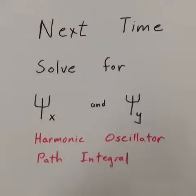Next time, we will solve for the x and y electron wave functions from the path integral using Feynman's harmonic oscillator analysis.